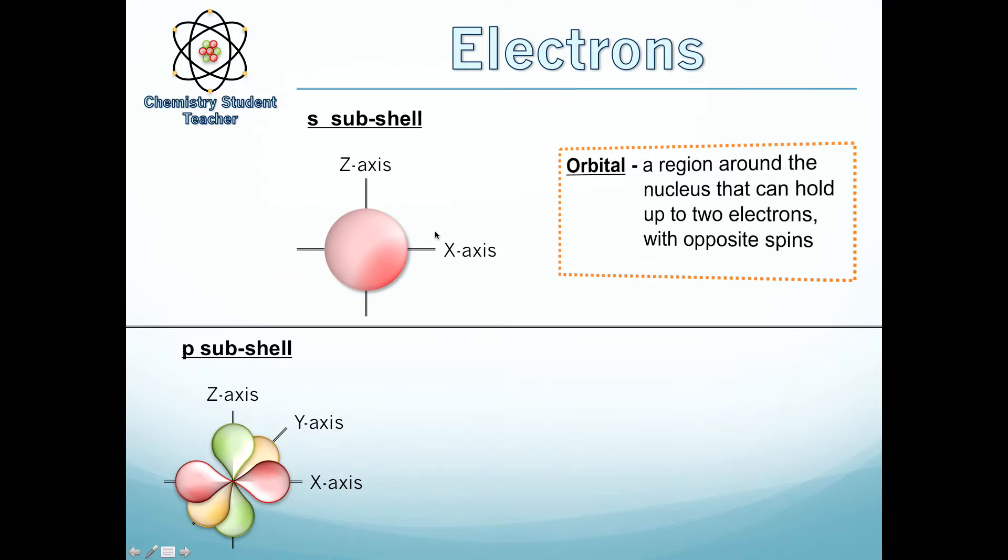An orbital isn't actually where the electron will always be. Quantum mechanics and mathematicians worked out that an electron from an atom can be anywhere at all in space. However, 99% of the time or 90% of the time, depending what variable they put in, it will be in a set area. And they worked out this area to be for S electrons a sphere, and for P electrons this three-dimensional dumbbell shape.